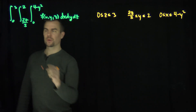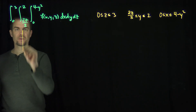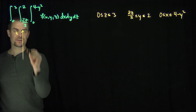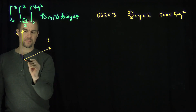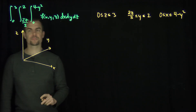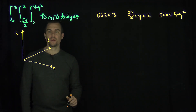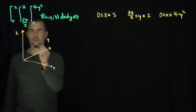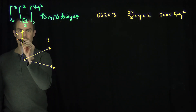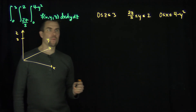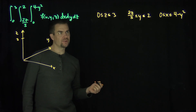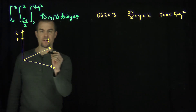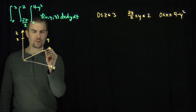Let's sketch this region and use it to flip the limits of integration. Here's the z-axis, the y-axis, and the x-axis. My z is going between 0 and 3, and my y is going between the line 2z/3 and 2, so here's the value y equals 2.